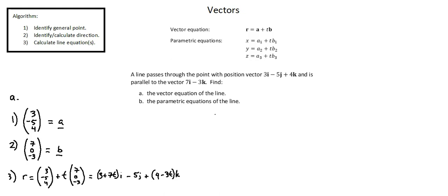Let's now look at requirement B, the parametric equations of the line. Looking at the general form for parametric equations, we have an equation for x, y, and z. In this example, we've already completed steps one and two. We've identified the general point, we've identified direction, and now for step three.